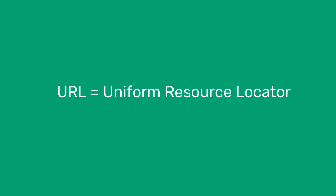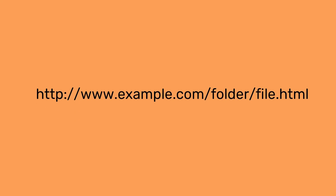URL stands for Uniform Resource Locator, and they are a way of identifying the location of resources, like web pages, on the internet. URLs are sometimes said to be split into how, where, and what. The how part is in the form of the protocol, which on the web is most likely to be HTTP. Remember, a protocol is another word for rules. This is then followed by the host — if we're looking for a default web server, it will usually be www, which means it is hosted on the World Wide Web.